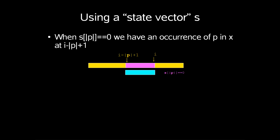When s of length p is set to 0, we know that we have an occurrence of p in x at i - length of p + 1.